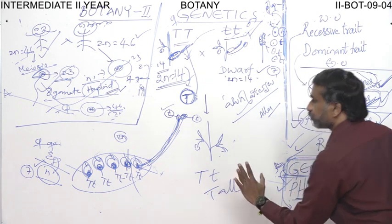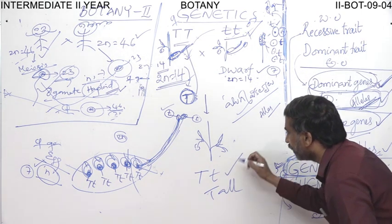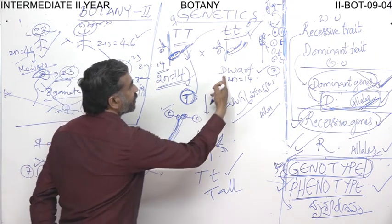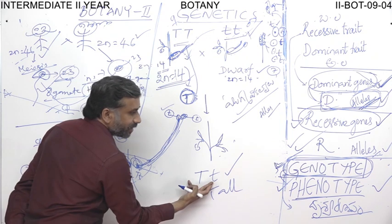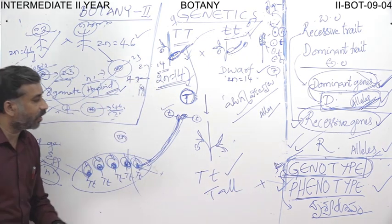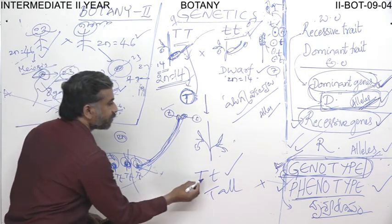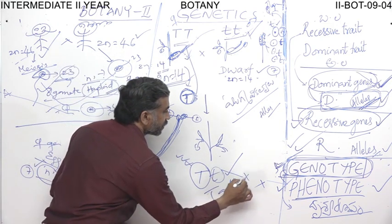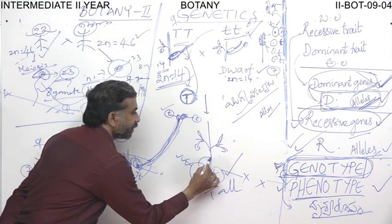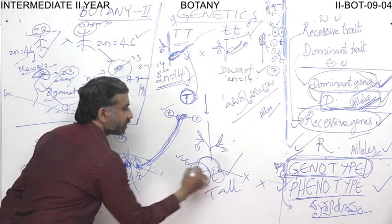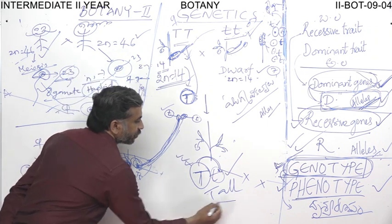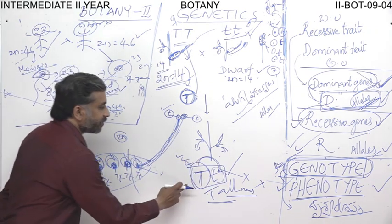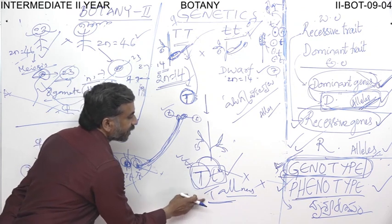Even though the F1 plant contains both capital T and small t, and small t is responsible for dwarfness while capital T is responsible for tallness, the plants are not showing any dwarfness — they show only tallness. The capital T allele is expressing its character and dominating or masking the small t. So the genotype of the F1 plant is capital T small t, and the phenotype is tall. All F1 plants are tall in nature.